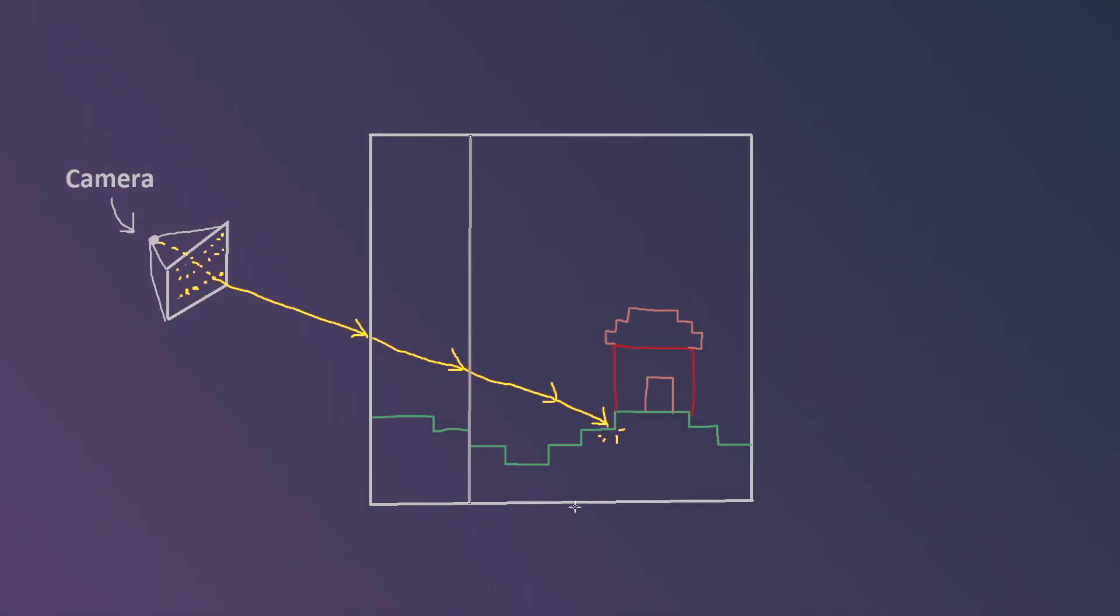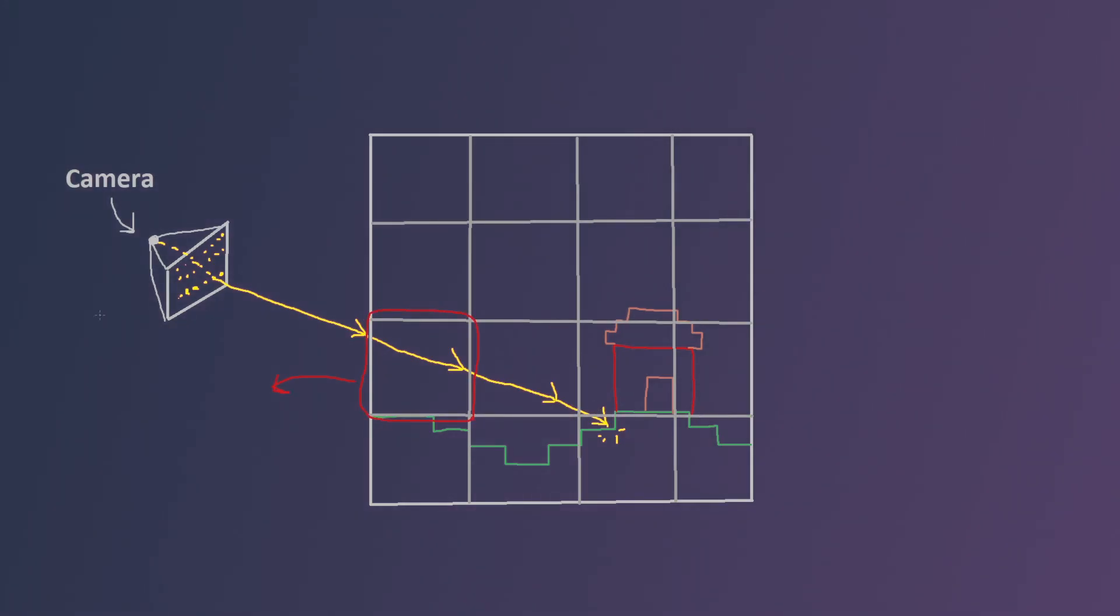The voxel grid itself is represented as a sparse tree, so large empty areas with no voxels in them are merged into single units that the rays can move through in just one step.